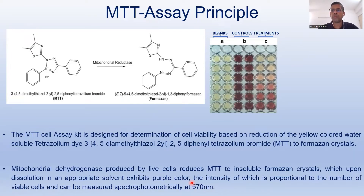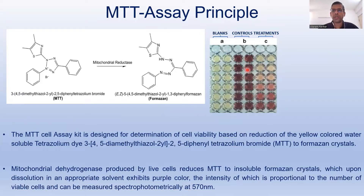Healthy cells form more formazone crystals; unhealthy or dead cells cannot. Looking at this image, the two columns on the left are blanks — they contain no cells, just media — to understand the effect of reagents on the assay; their values will be negated. The middle two rows are controls showing a nice purplish color, indicating healthy mitochondria and active mitochondrial enzymes metabolizing MTT to formazone.